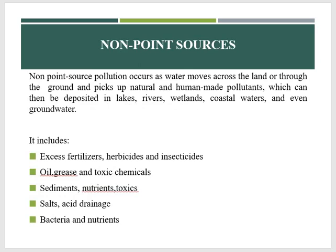Non-point source pollution is mainly caused by rainfall. When rainwater falls on the ground, it picks up and carries away natural and human-made pollutants, finally depositing them into lakes, rivers, or any water body — or even into groundwater sources. Non-point source pollution can include excess fertilizers, herbicides (used to destroy unwanted vegetation), and insecticides (used to destroy unwanted insects), from either agricultural lands or residential areas.